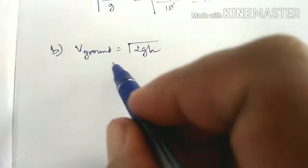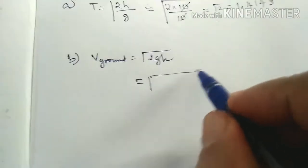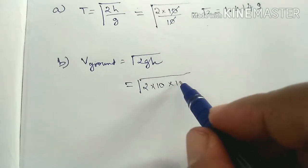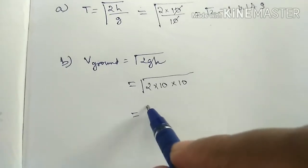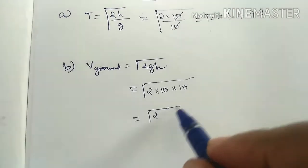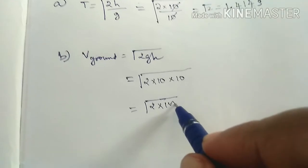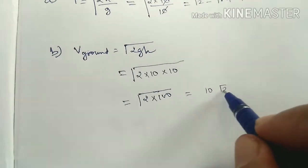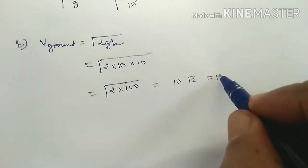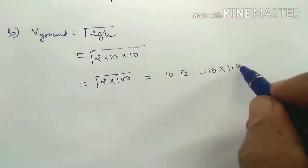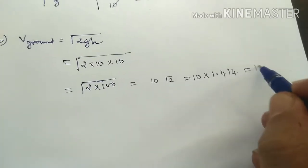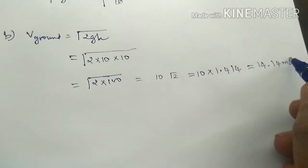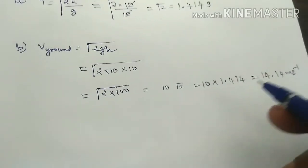Substitute the value, G is 10, which is also 10. This is the value of root 2 into 100. 100 is root 2, so we have root 2 into root 2. What is the value of root 2? 1.414. What is the value? 14.14 m/s power minus 1.